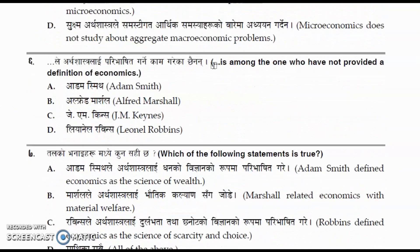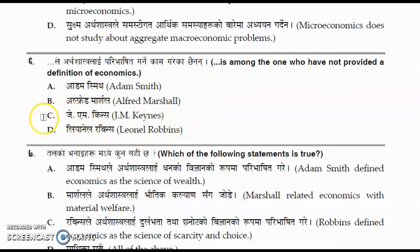Question number six: which of the following has not provided a definition of economics? The options are Adam Smith, Alfred Marshall, J.M. Keynes, and Lionel Robbins. The correct answer is option C, J.M. Keynes — he has not provided a definition of economics.